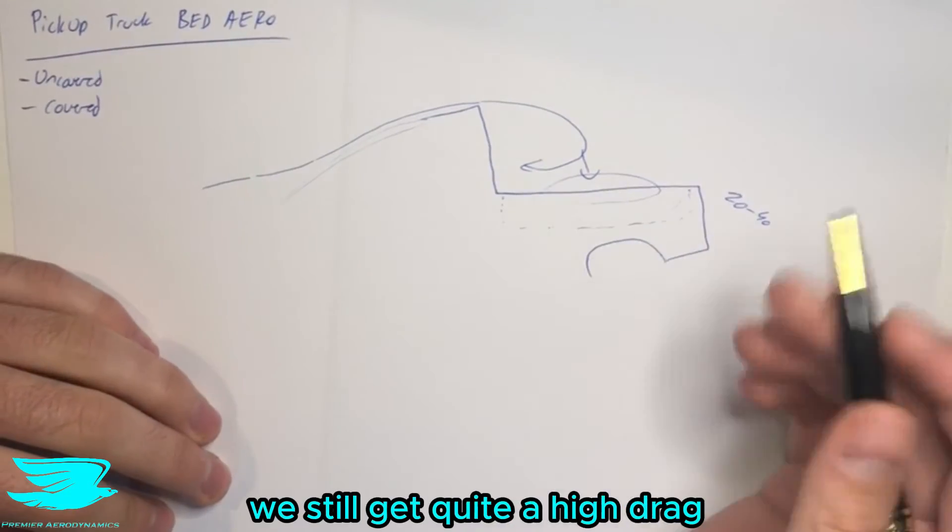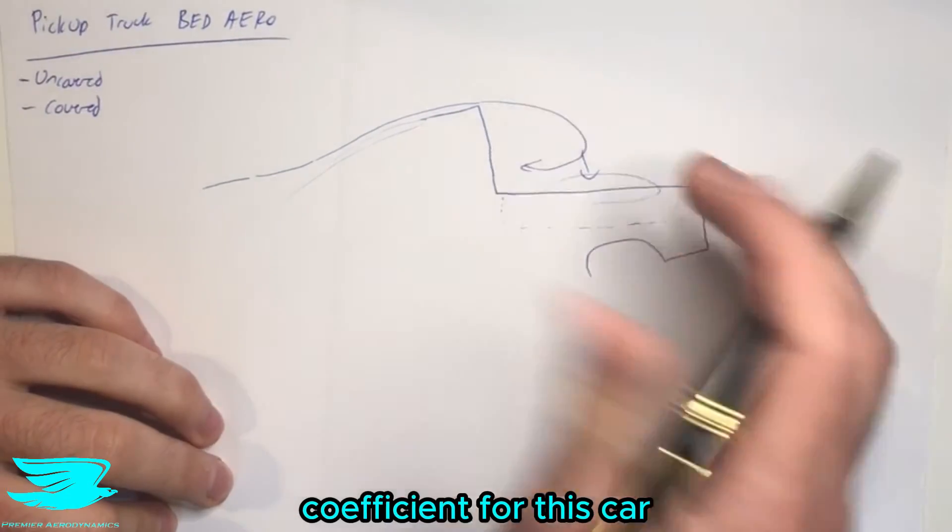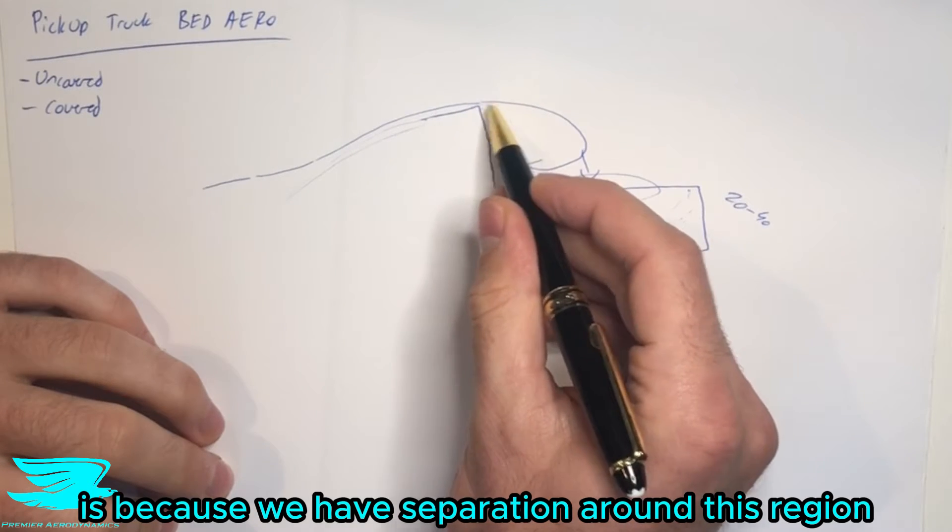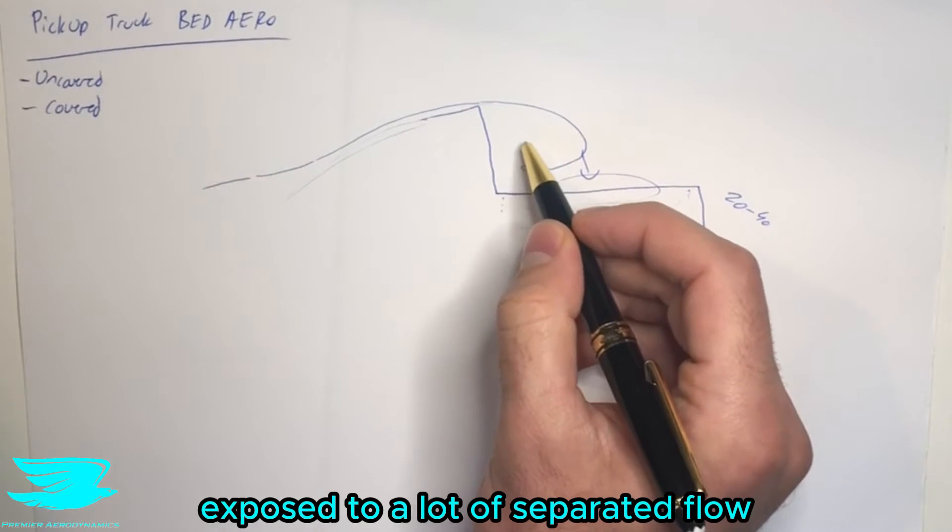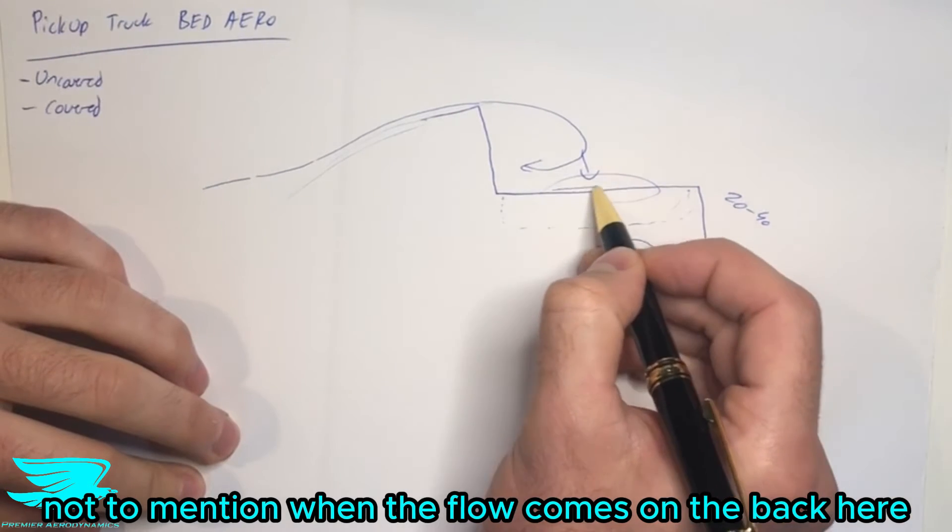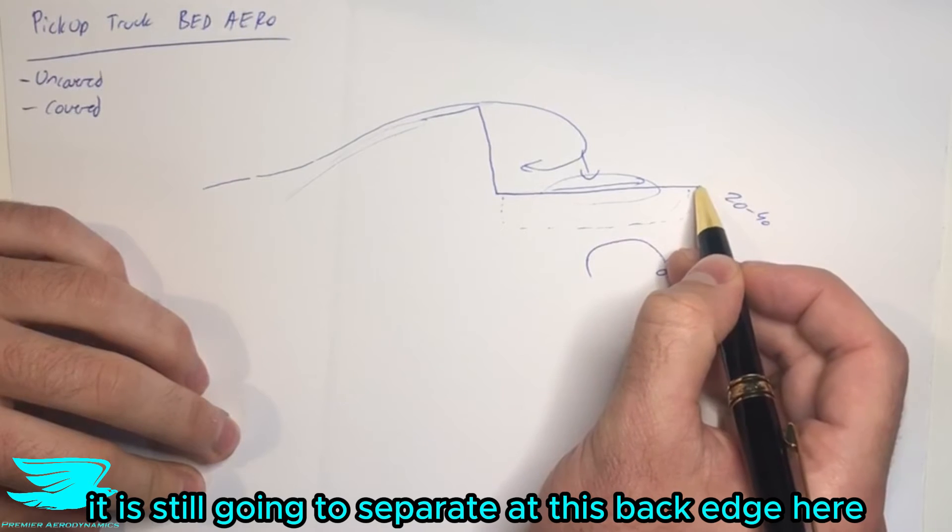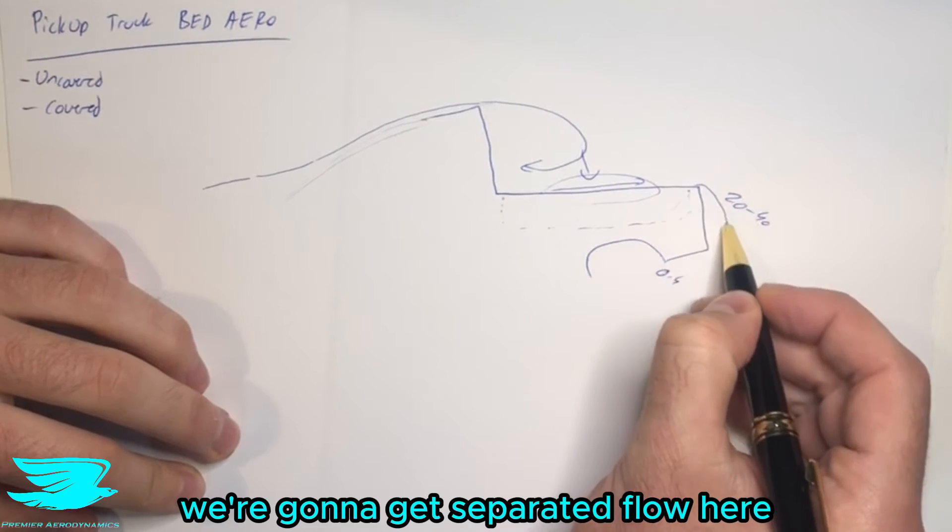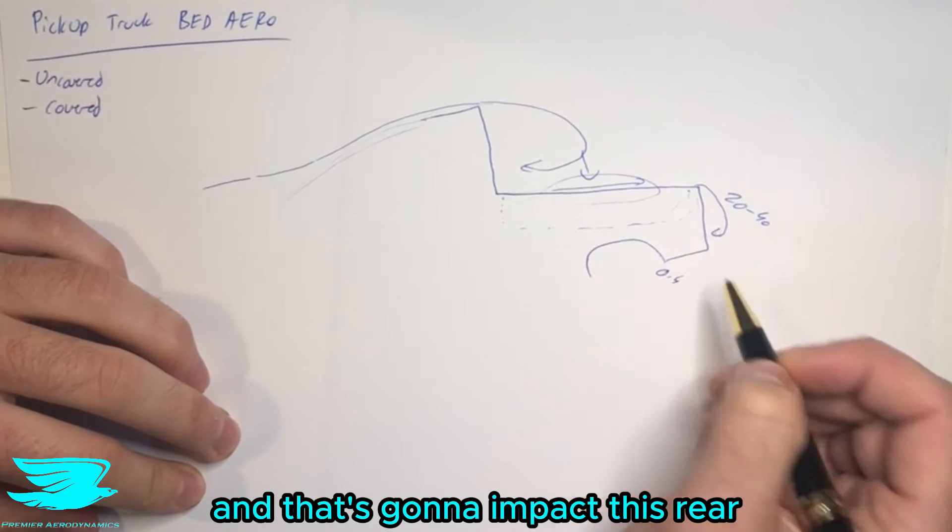And the reason why we still get quite a high drag coefficient for this car, still around about 0.4, is because we have separation around this region, and then we have the back exposed to a lot of separated flow. Not to mention, when the flow comes along the back here, which is now covered, this bed, it is still going to separate at this back edge here, where the tailgate comes down. And we're going to get separated flow here, and that's going to impact this rear.